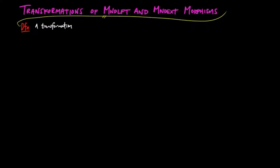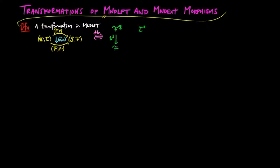The transformation in the category of monad lifts from the morphism P̃P to P̃'P' consists of a pair of natural transformations: α̃ from P̃ to P̃', and α from P to P',